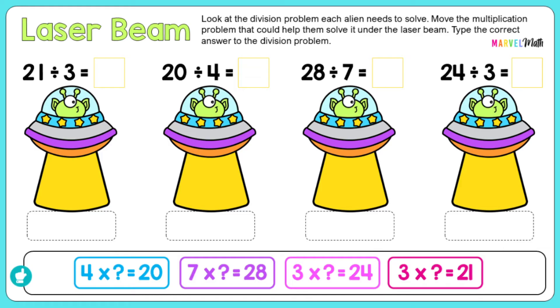Then we have our laser beam slide. So you're going to look at the division problem that each of the aliens has to solve. And then you're going to put the related multiplication problem, what you should be thinking, below it so they can laser beam it up to help them. So the first one is 21 divided by 3. So the related multiplication problem I can think about is 3 times something equals 21. And I see that right here, so I'm going to slide that on over.